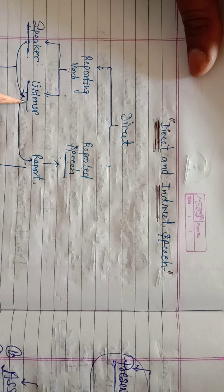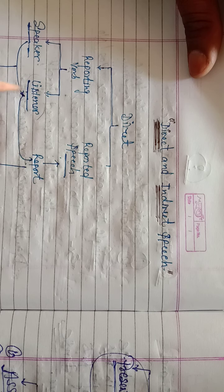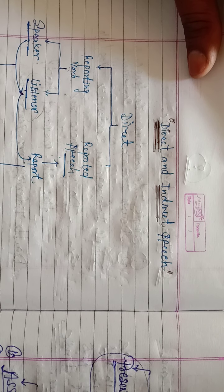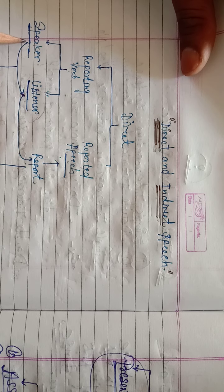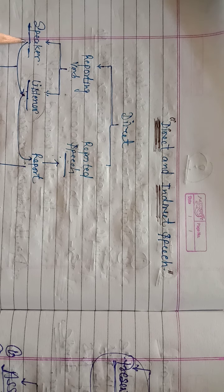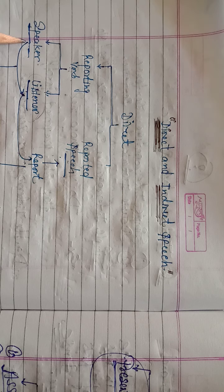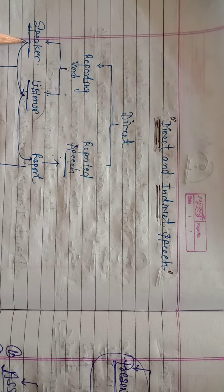Indirectly, there is a listener in the reporting verb. We must mention the listener. Sometimes we say 'he said', 'they said', 'he says', 'I said to him' — but even if we are not mentioning the listener, there should be a listener.